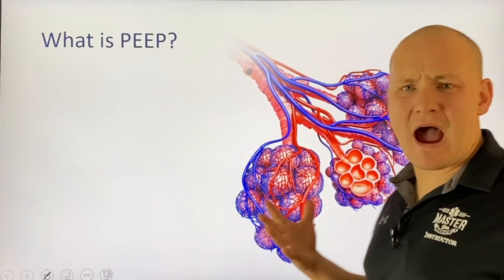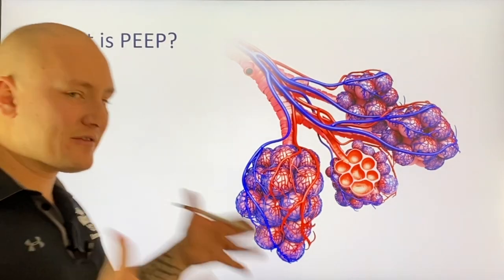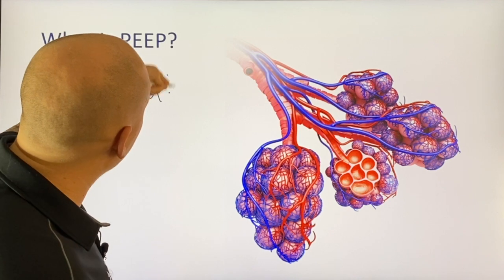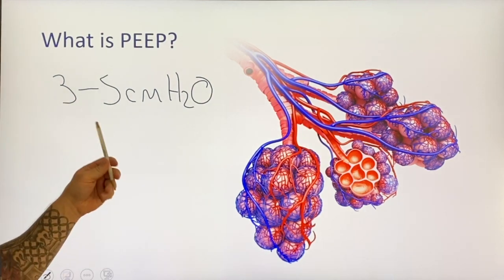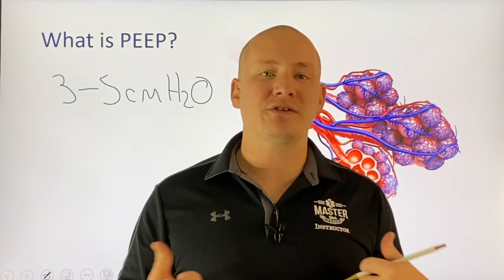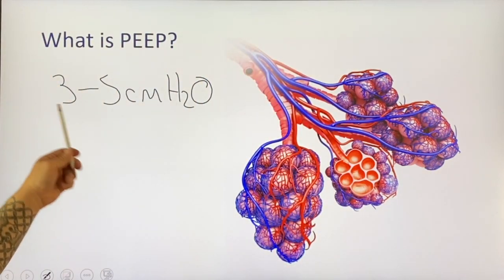First, let's talk about what PEEP actually is. PEEP affects the alveoli in a few different ways. We actually have PEEP — positive end-expiratory pressure — within our lungs right now as we're breathing, and we call that physiological PEEP. Physiological PEEP is basically around 3 to 5 centimeters of water, which means we are maintaining pressure 3 to 5 cmH2O above atmospheric pressure to keep some air inside the lungs at expiration so those alveoli stay open.